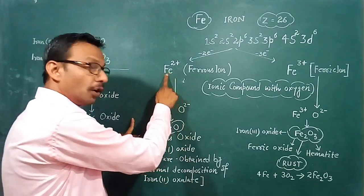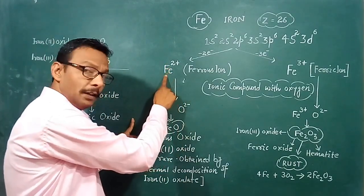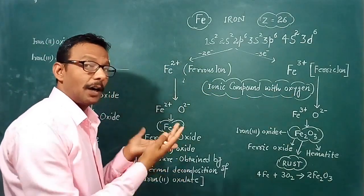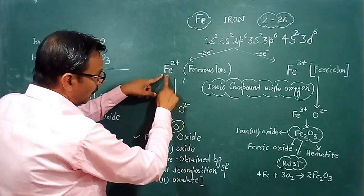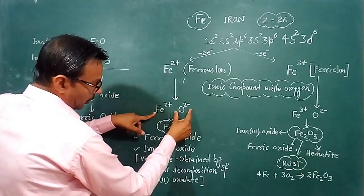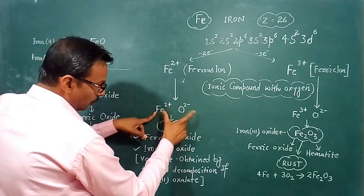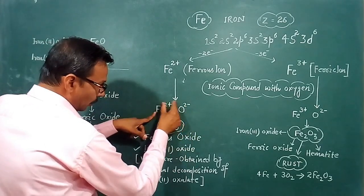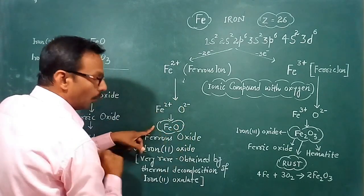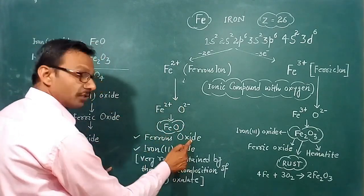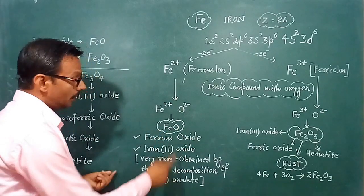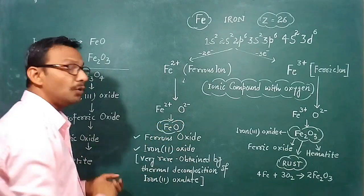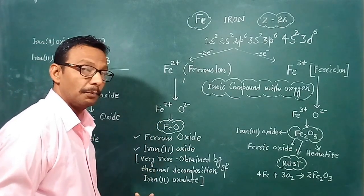Here the metal is iron and the non-metal is oxygen, because oxide means oxygen. Iron and oxide combine as Fe2+ and O2−. These two charges cancel to give FeO — ferrous oxide. FeO, the combination of iron and oxide, is very rare.